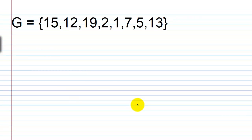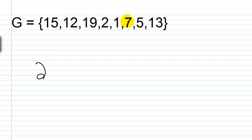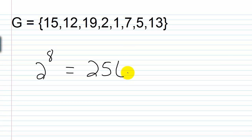Let's look at this last one. Set G has the elements 15, 12, 19, 2, 1, 7, 5, and 13. How many subsets can be made out of set G? Following our formula — two raised to the number of elements — we have eight elements, so two to the eighth power is 256.